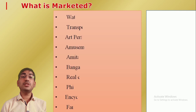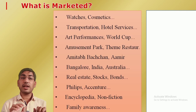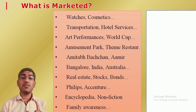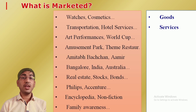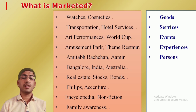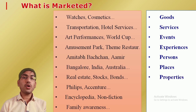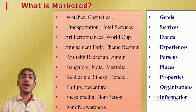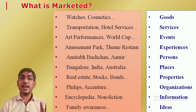There are 10 entities for which marketing is possible. First, goods — like watches, cosmetics. Then services — like hotel services, transportation, insurance. Then events — like the World Cup. Then experiences — like a amusement park. Then personalities or persons — these are celebrities. Then places — different locations. Properties — real estate, bonds, shares. Organizations — like different brands such as Philips. Information — like Google or an encyclopedia which provides information. And finally ideas — like family planning, awareness, or eradication of polio. So there are 10 entities for which marketing is possible.